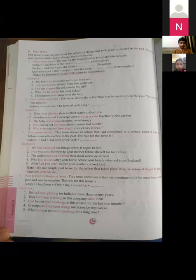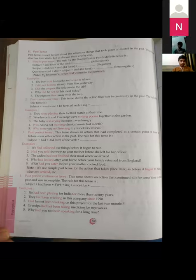About past tense: past tense is used to talk about the actions or things that took place or existed in the past. With the word past tense, this tense also has four kinds as like present tense, and three forms of sentences: affirmative, negative and interrogative.